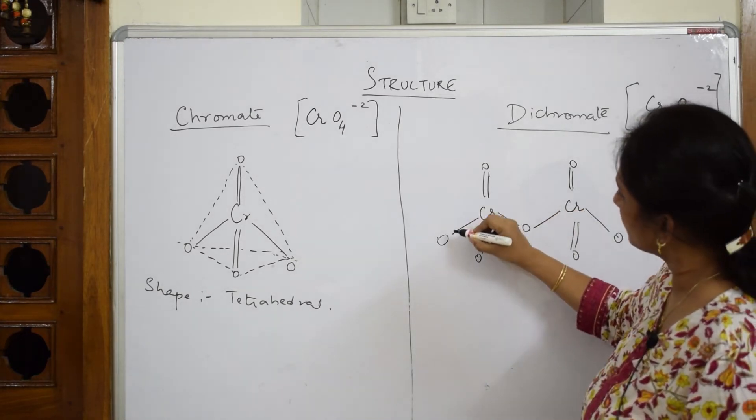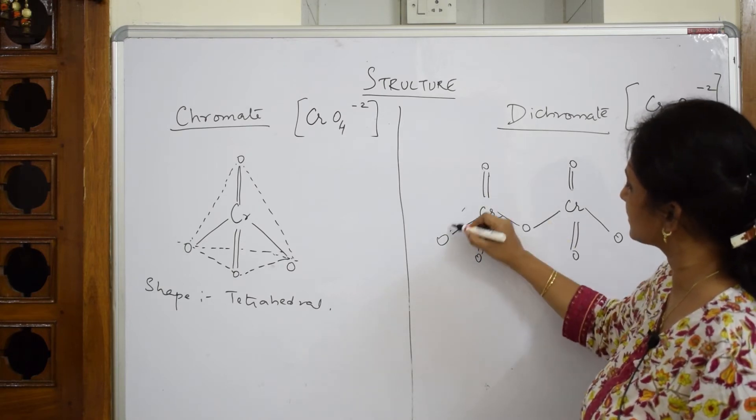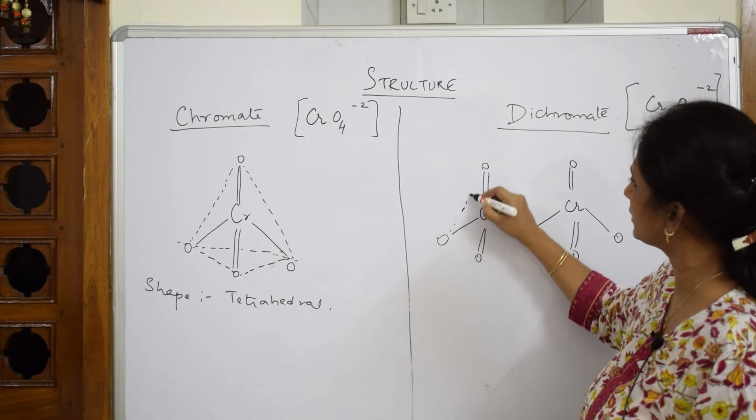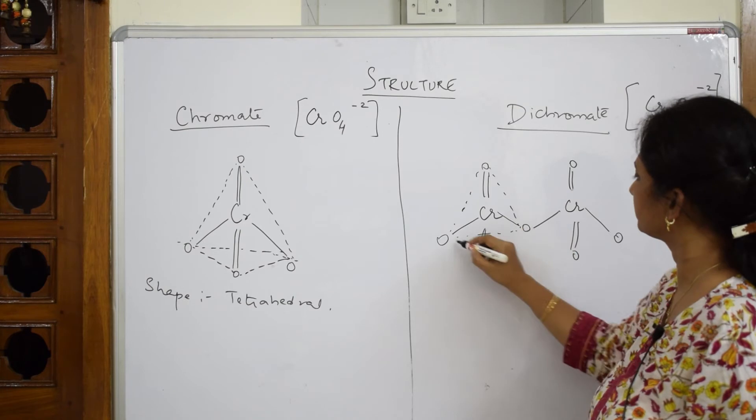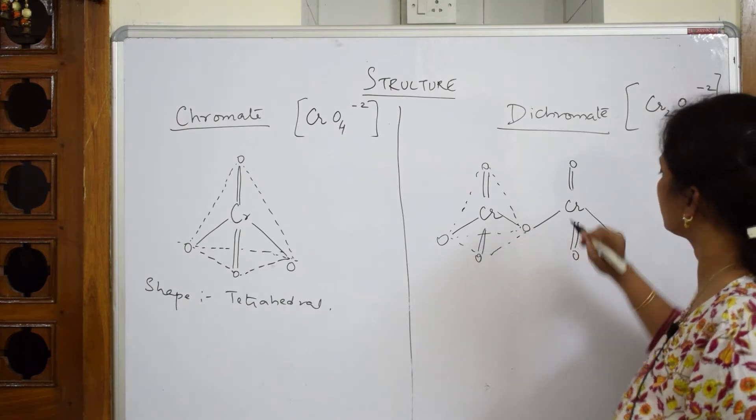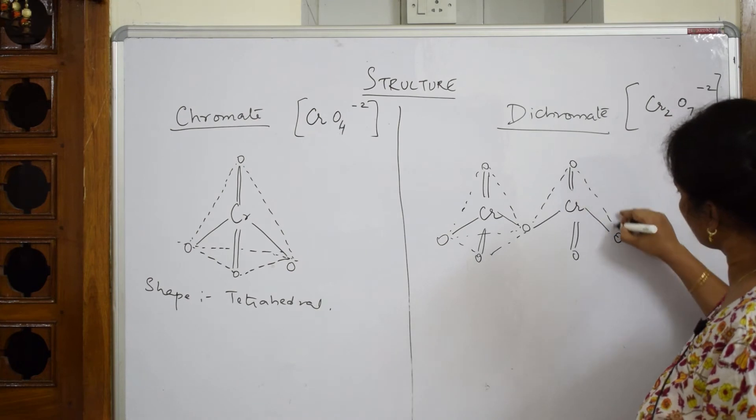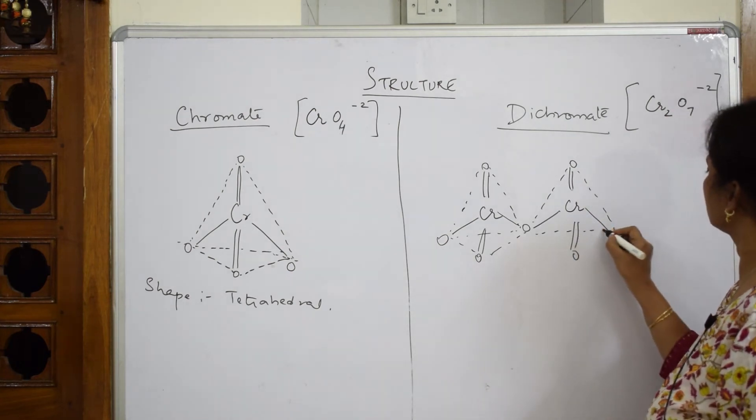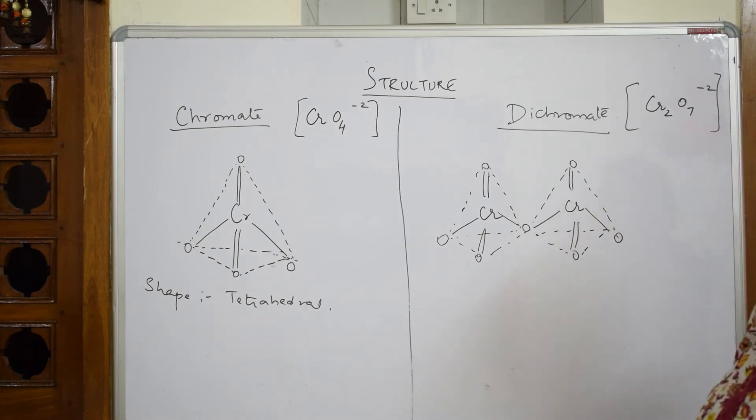Now just join like this. If you wish to join like this, as I have shown it. If you wish to join, you can join the ring. Not a problem. Tetrahedral here also. So this is your dichromate ion.